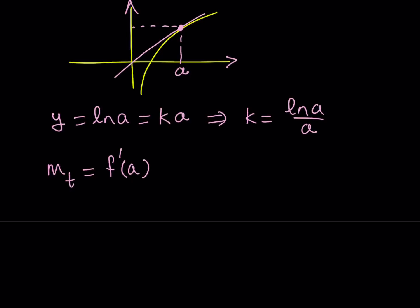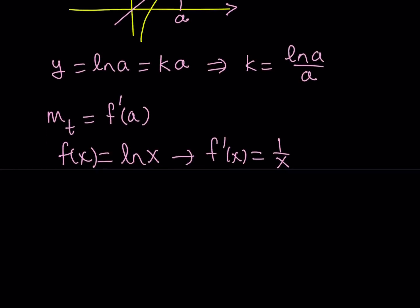But what is f in this case? Well, f of x is going to be the curve, which is ln x, and we're going to differentiate it. When you differentiate f of x, you get 1 over x. And if you replace x with a, or if you evaluate f prime at a, you get 1 over a.